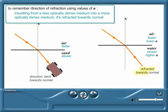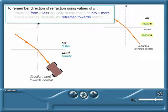We can learn a little rhyme to help us remember the direction of refraction. Travelling from a less optically dense medium, into a more optically dense medium, it's refracted towards the normal. Try saying it like this to help you remember it. From less into more, it's refracted towards.